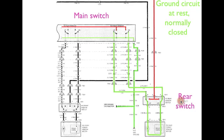We've got the main switch, and the power comes to the main switch through a wire. And you've got the rear switch. Power comes to the rear switch from a different wire, different source. This is the power circuit at rest, normally open. Notice the ground circuit is normally closed—that means all ground connections are connected.